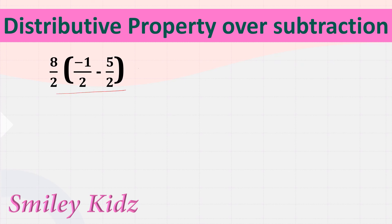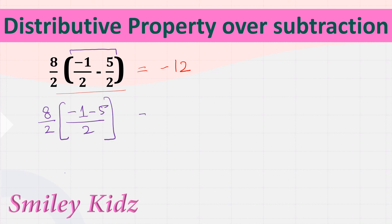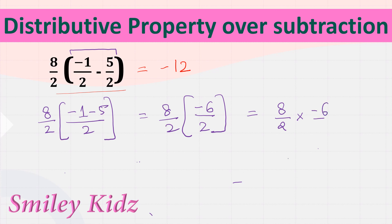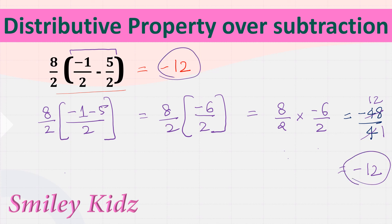By solving this we got the answer as −12. Let's cross-check. First solve the brackets: 8/2 multiplied by (−1 minus 5) over 2. Same signs, so we add: −6/2. Removing the brackets: 8/2 multiplied by −6/2. Multiplying gives −48/4. Simplifying: 4 times 12 equals −12. We got the same answer. This is the distributive property over subtraction.